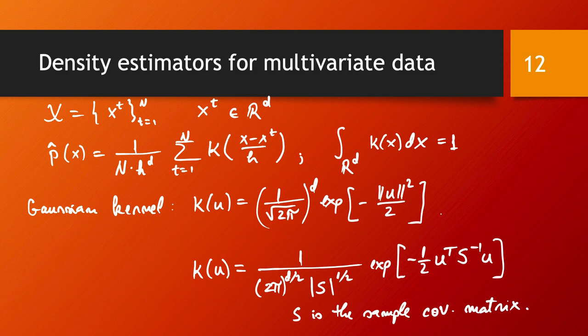And this corresponds to using the Mahalanobis distance instead of the Euclidean distance and it integrates into the kernel function the various correlations between the dimensions of your data.